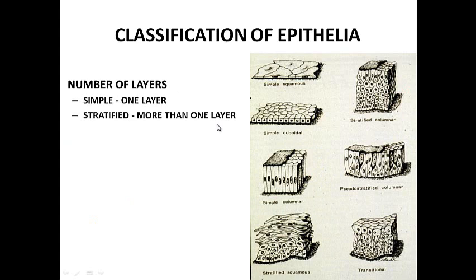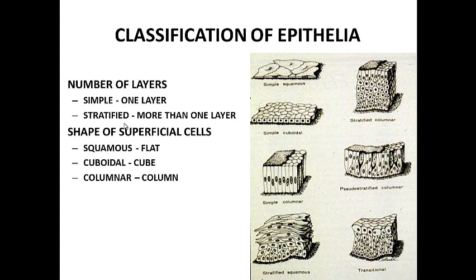Epithelium is classified in different ways. One is by number of layers: if you have one layer, we call it simple; if you have more than one layer, we call it stratified. We also classify epithelium based on the cells on the surface: if they're flat, we call them squamous; if they're little boxes, cuboidal; if they're columns, columnar. So you can have simple columnar, stratified columnar, or stratified squamous epithelium.